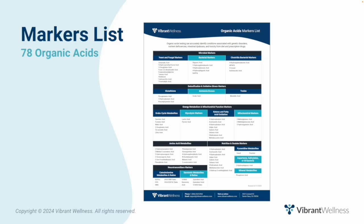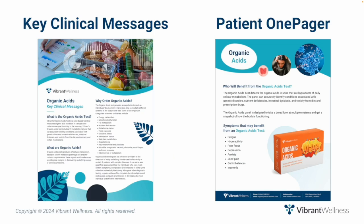Organic acids are byproducts of cellular metabolism. Based on known metabolic pathways and enzyme cofactor requirements, these organic acid markers can provide great insights in discovering underlying causes of chronic symptoms. The organic acids test provides a snapshot in time of an individual's biochemistry, and provides data on multiple different systems in the body in one test.